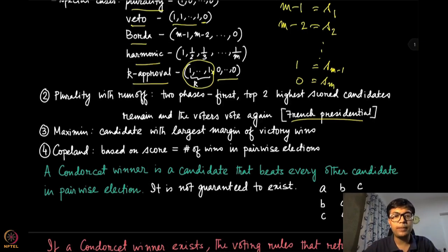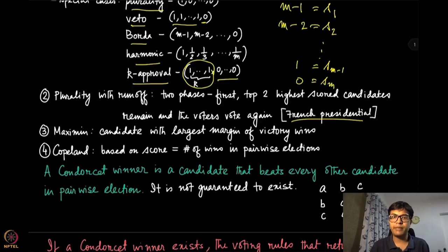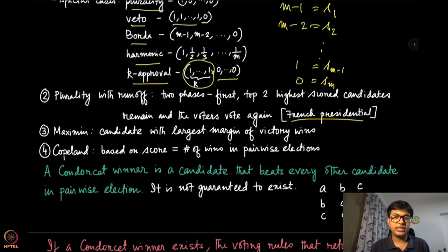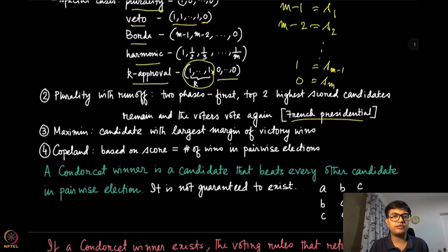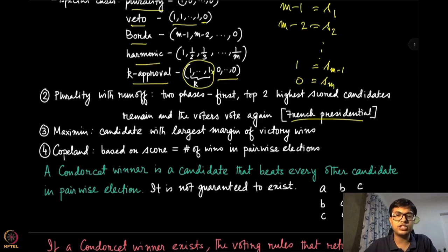The fourth type is the Copeland rule. We consider pairs of candidates and look at what happens in their pairwise election. We look at, say, a and b, remove all other candidates, and see who wins the pairwise election. If a wins against b, we give a a score of one. We do this for all possible pairs. Copeland's rule selects the candidate with the largest total score from all m-1 pairwise elections as the winner.